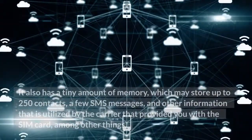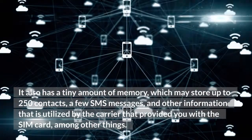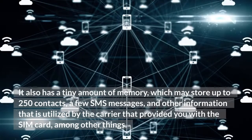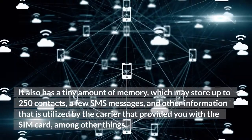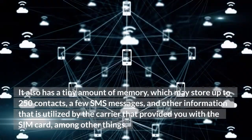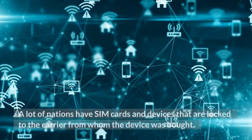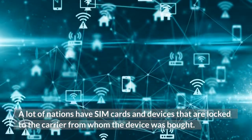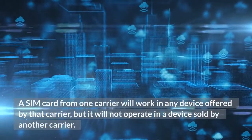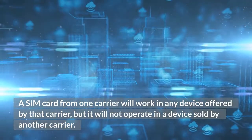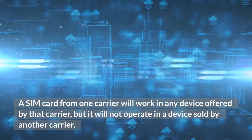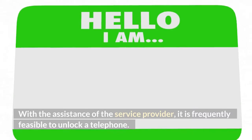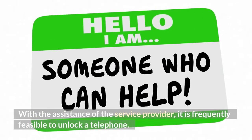A SIM card also has a tiny amount of memory, which may store up to 250 contacts, a few SMS messages, and other information utilized by the carrier. Many nations have SIM cards and devices that are locked to the carrier from whom the device was bought. A SIM card from one carrier will work in any device offered by that carrier, but will not operate in a device sold by another carrier. With the assistance of the service provider, it is frequently possible to unlock a telephone.